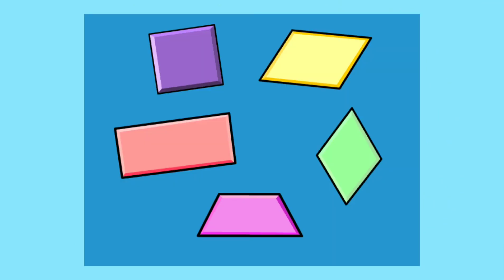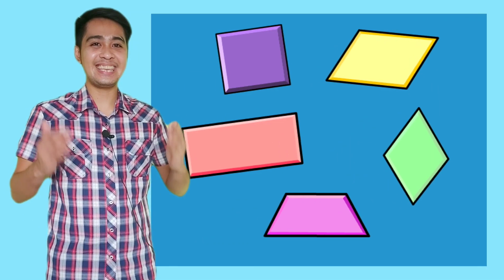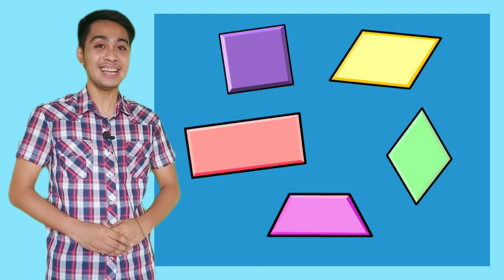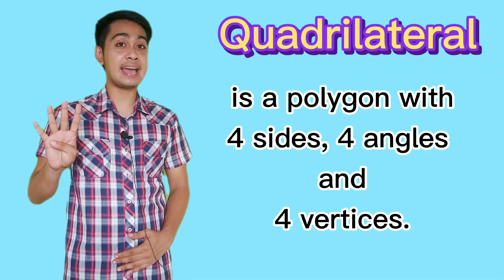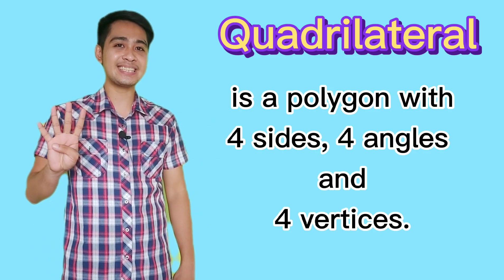How about these figures? Can you describe each illustration? Say something about its shape, number of sides, corners, and the kind of lines it's made of. Yes, these are quadrilaterals. A quadrilateral is a polygon with four sides, four angles, and four vertices.